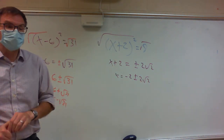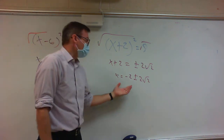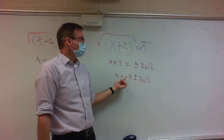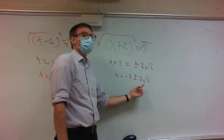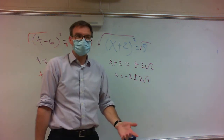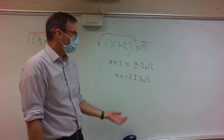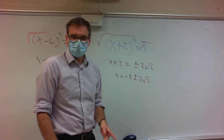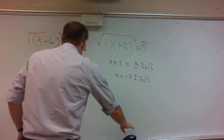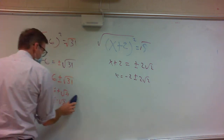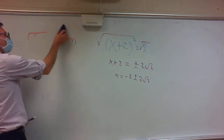Now, if you had to get a decimal answer, obviously you could do negative 2 plus 2 square roots of 2, and negative 2 minus 2 square roots of 2, but for the most part this is what I want. Let's do one more of these.